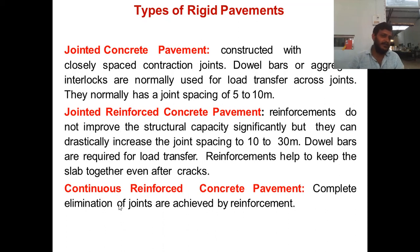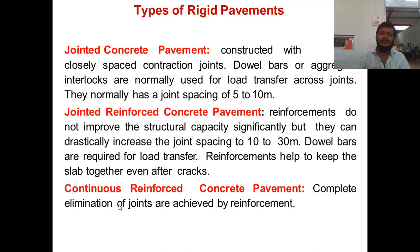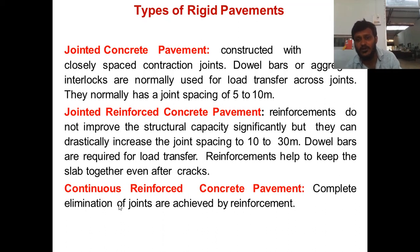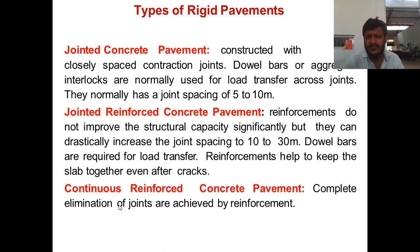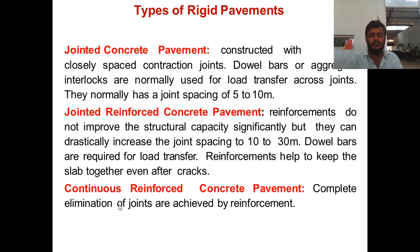Jointed reinforced concrete pavement: the reinforcement does not improve the structural capacity of the pavement but can drastically increase the joint spacing — from 10 to 30 meters. Dowel bars are required for load transfer and help keep the slab together even after cracks form. Continuous reinforced concrete pavement: the reinforcement runs all across the length of the road, thereby totally reducing or completely eliminating joints.